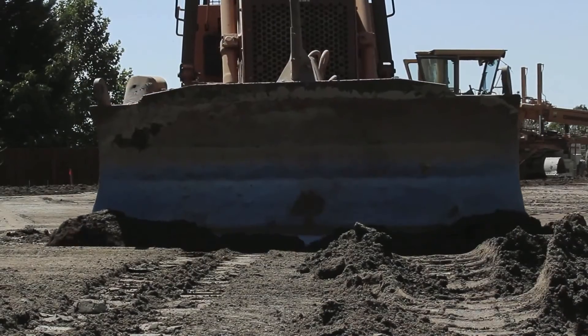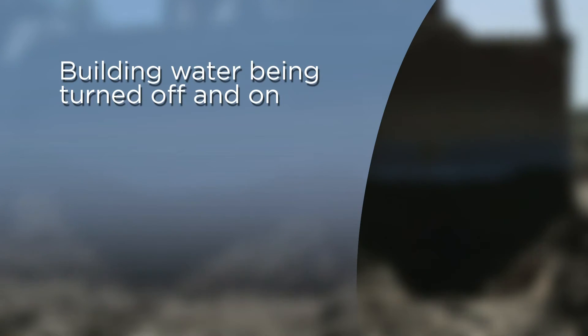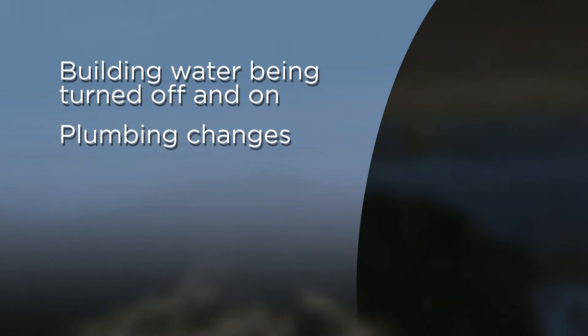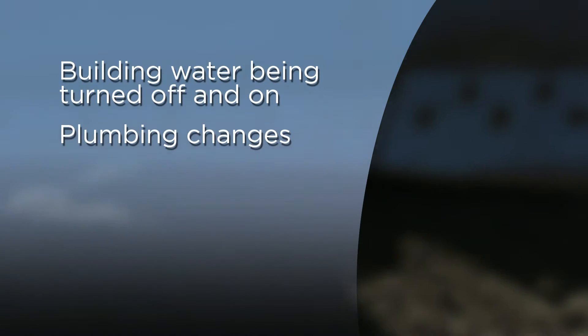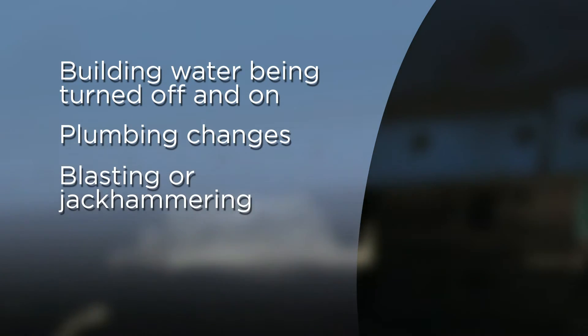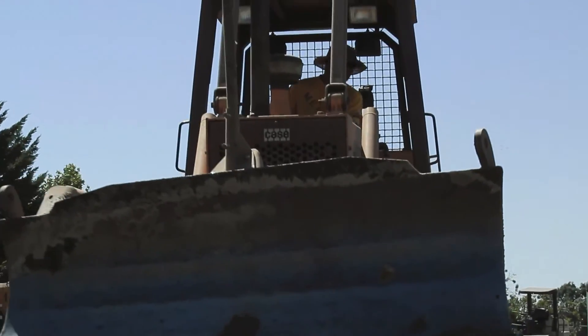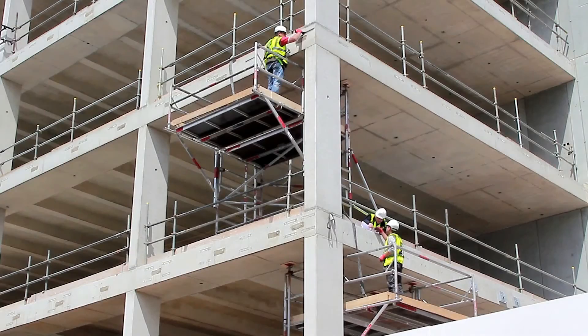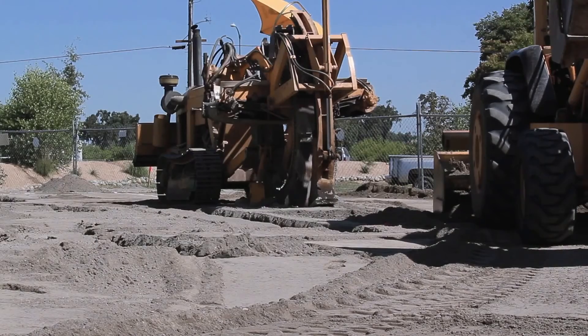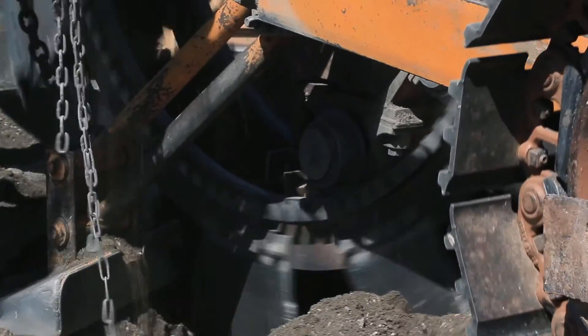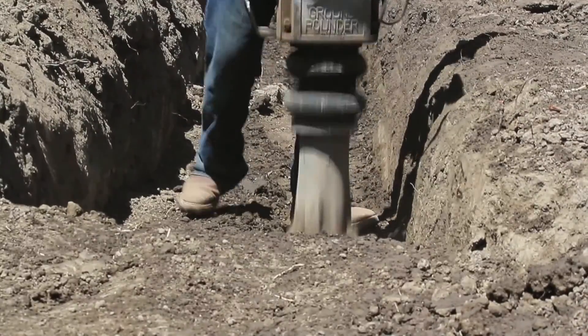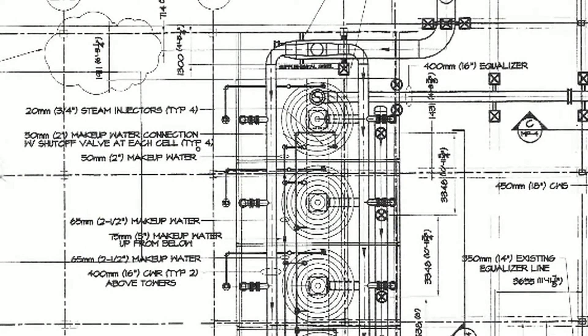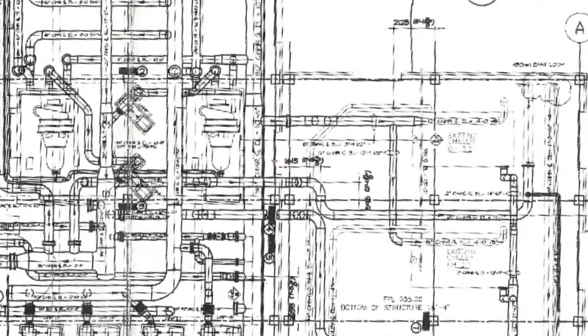The important construction activities to pay attention to include anything that causes the water to the building to be turned off and then turned back on, changes to the plumbing in the building, or anything that shakes the ground like blasting or jackhammering. Note that in densely developed areas these activities may affect adjacent buildings. These can be risk factors because they can cause water interruptions, which can cause changes in water pressure, releasing biofilm, and introduce organic matter into the system. Altering the design of the plumbing system by adding pipes and fixtures can decrease the effectiveness of hot water heaters or disinfection systems.